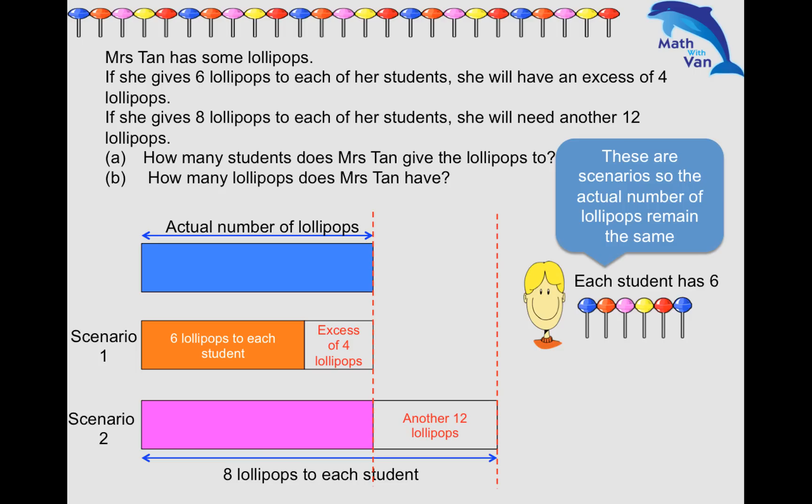Since we don't know the actual total number of lollipops, we have to work along the difference - the difference between the total in both scenarios and the difference between what each student has in both scenarios.